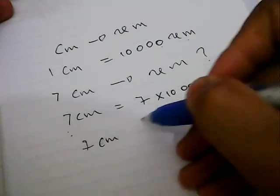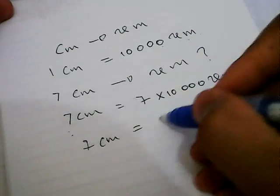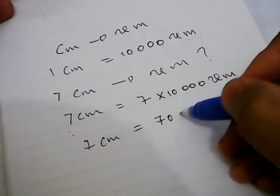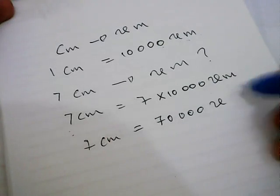Seven centimeters is equal to seventy thousand micrometers.